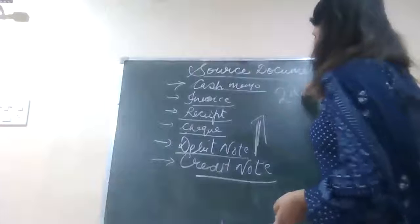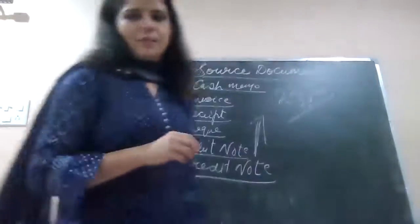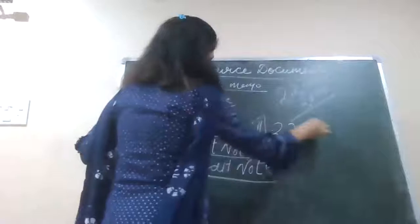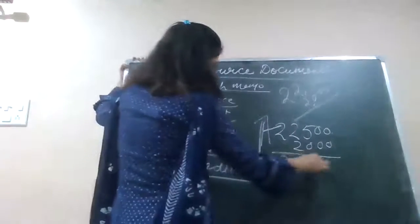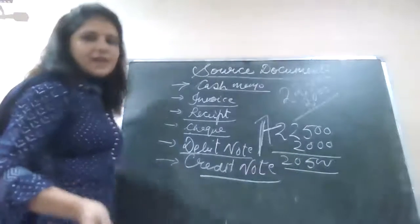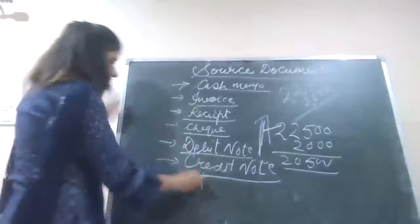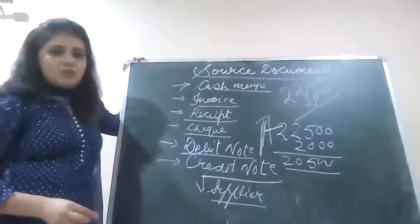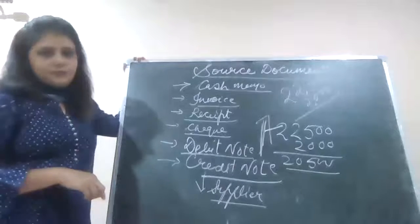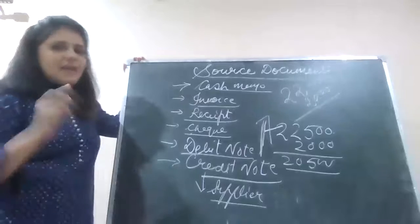For example, original bill was of Rs 22,500 but he sends back the goods of Rs 2,000. From 22,500, this is 2,500. I have sold it in the bill, he sent back to me. So now I will adjust the bill and I will inform him yes, the things you send back that I received.